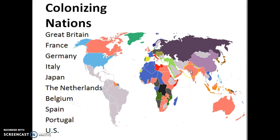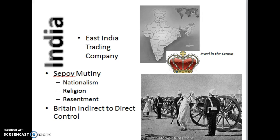One particularly important colony was India, nicknamed the jewel in the crown because of its natural resources and its huge population — a perfect place for Britain to sell the products it was manufacturing in factories. One of the first ways Britain got into India was economic: the British controlled a company called the British East India Trade Company, which even employed its own soldiers known as sepoys, or Indian soldiers.